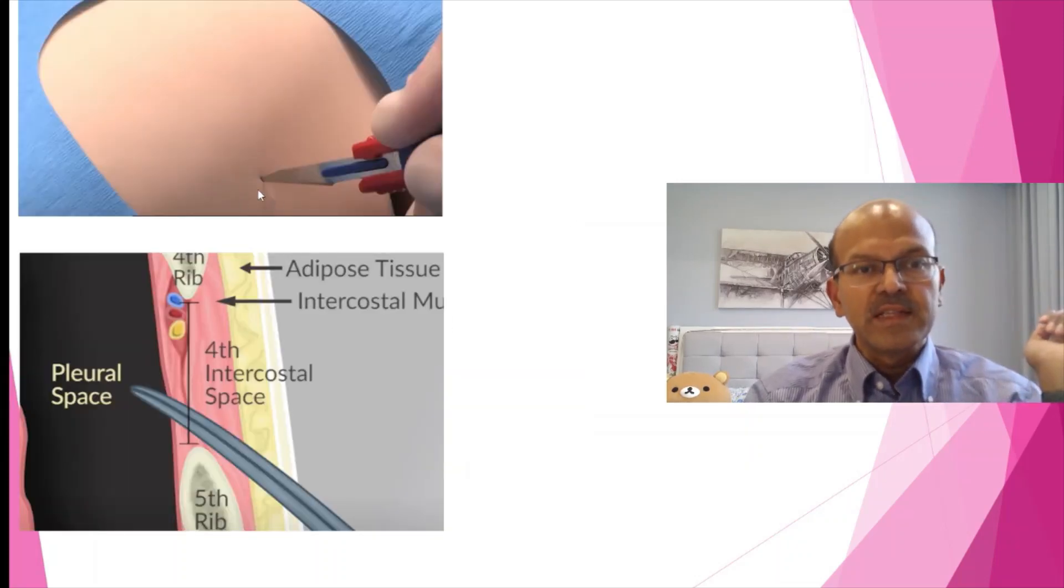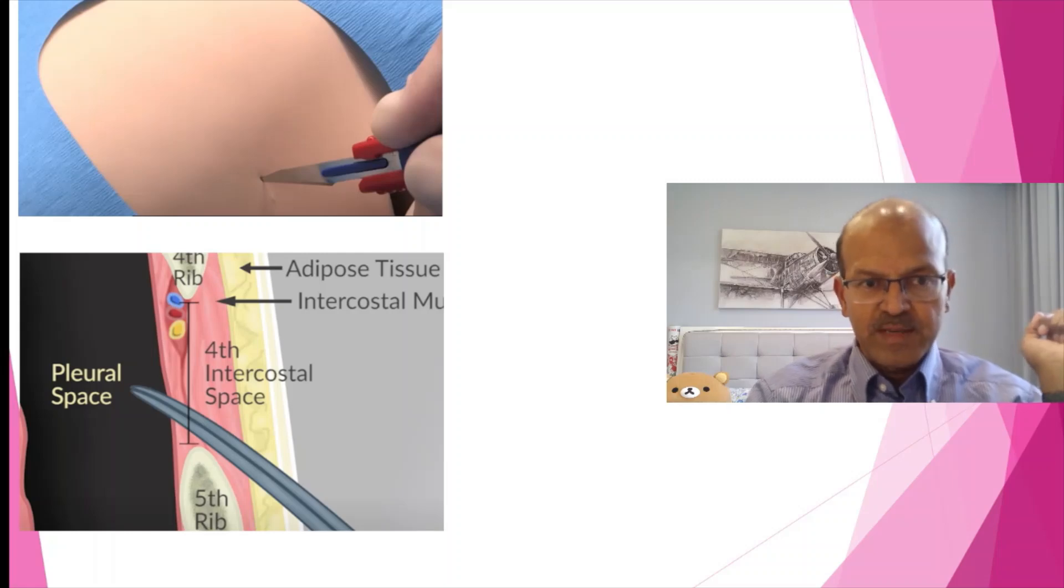This is the fourth intercostal space in the mid-clavicular line. You make about 0.5 cm small nick. You can widen it with a blunt dissection and you can either go up to the pleural space or up to the muscle layer. Widen it a little bit so the insertion itself, you don't need to use much force. Especially on the left side, remember that if you are using force, you have a chance of going up to the heart. So be careful to do this blunt dissection and do not use the trocar on the left side.